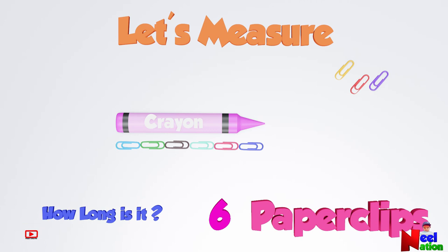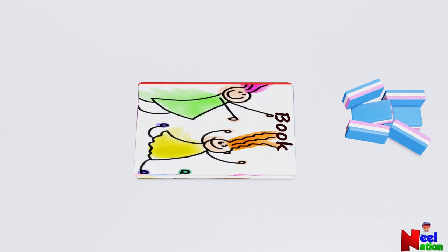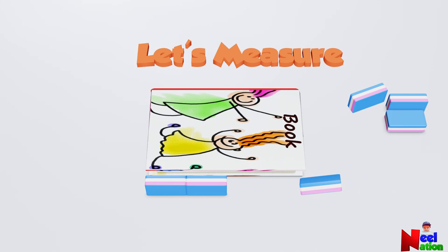Now let's measure the length of the book using some erasers. How long is it? Four erasers. That's great! The book is four erasers long.